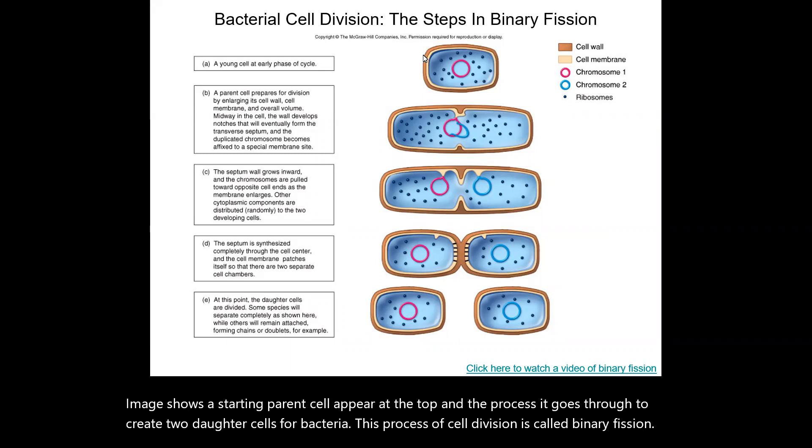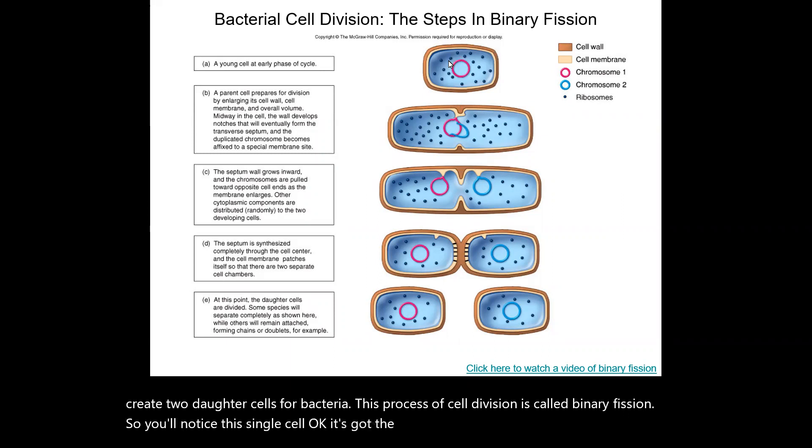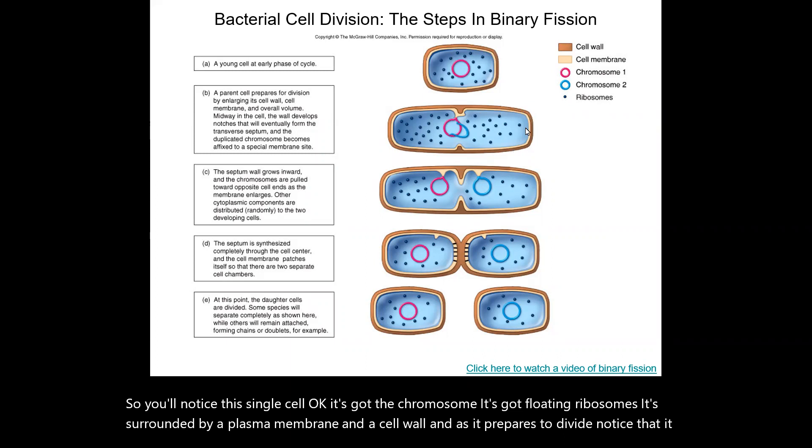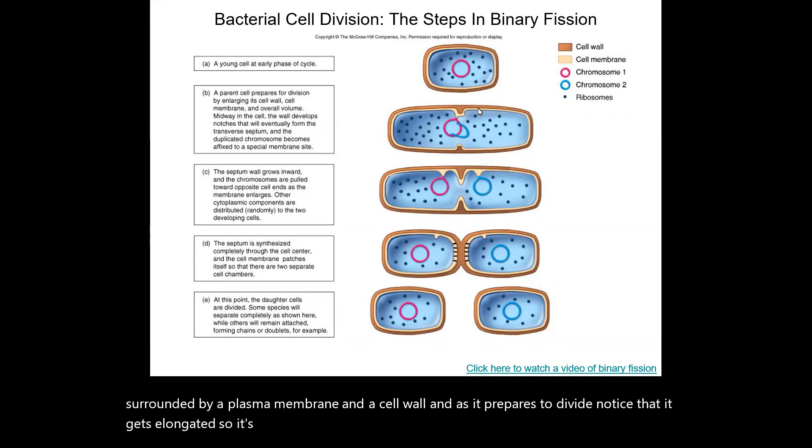So you'll notice this single cell, it's got the chromosome, it's got floating ribosomes, it's surrounded by a plasma membrane and a cell wall. And as it prepares to divide, notice that it gets elongated, enlarging that cell membrane, the cell wall, its overall volume.